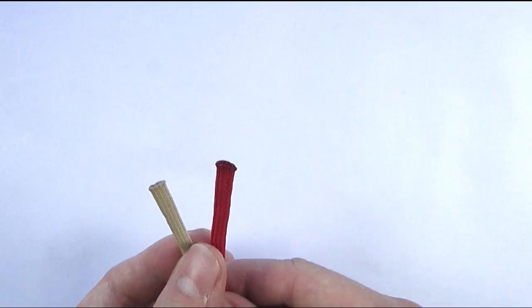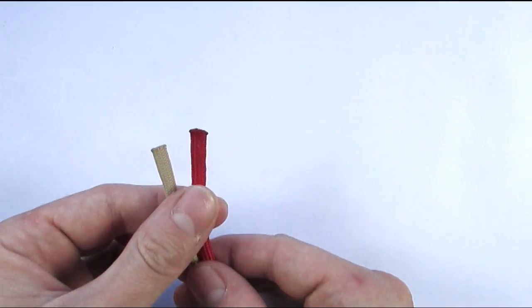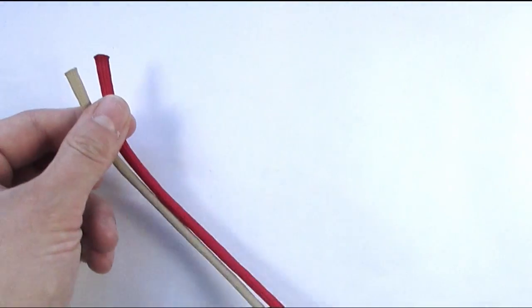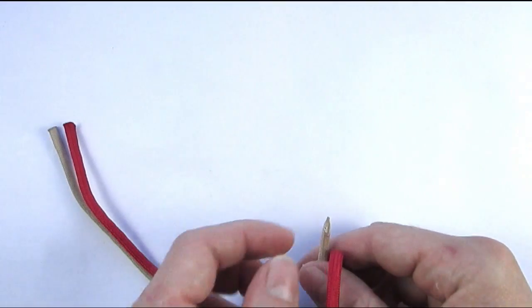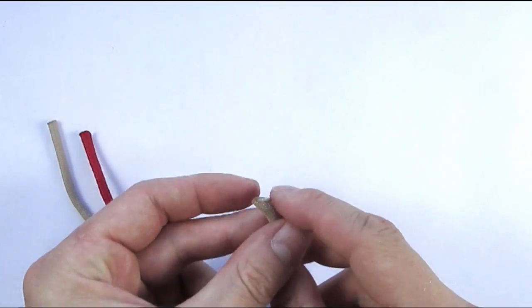These ends are finished and we're going to be working with the ends on the other side. So we're going to take one end and attach a lacing needle onto it.